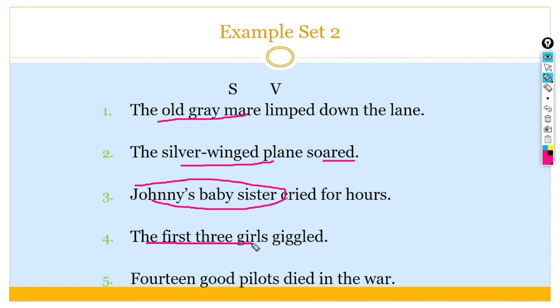The silver winged plane soared. It is a subject and verb. Johnny's baby sister is a subject. Cried for hours. The first three girls giggled. It is a subject and giggled is the verb. Fourteen good pilots died in the war. Fourteen good pilots is the subject and died is the verb.